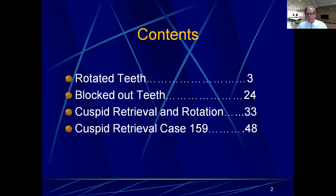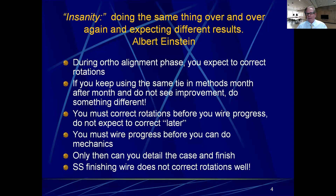One of my very good student doctors sent me a revision case. He'd been in treatment for 12 months trying to derotate one lower incisor, and at the end of 12 months it looked exactly like it did on day one. I wrote him back and said, 'What were you thinking all these 11 months — was it just going to magically get better on the 13th month?' That prompted this presentation. As Albert Einstein said, insanity is doing the same thing over and over again and expecting a different result — and that's exactly what my doctor was doing, using the same tie-in method for 11 straight months.